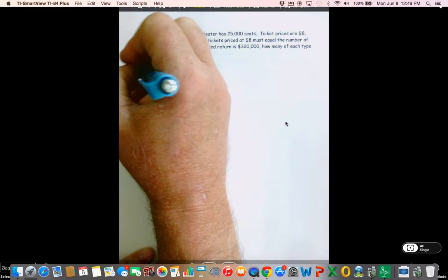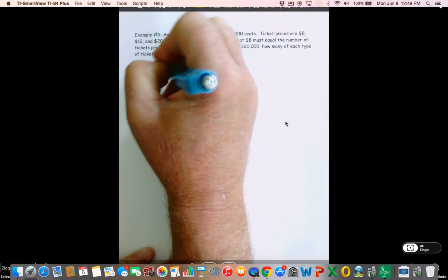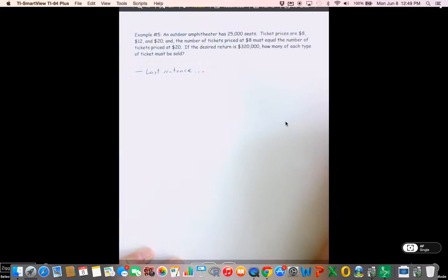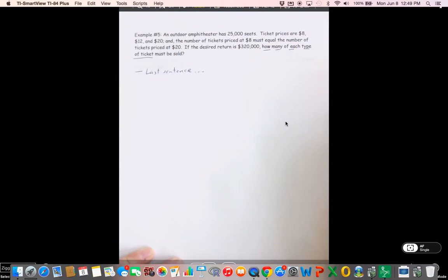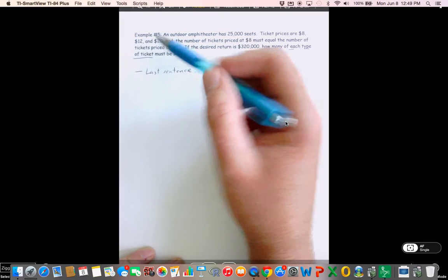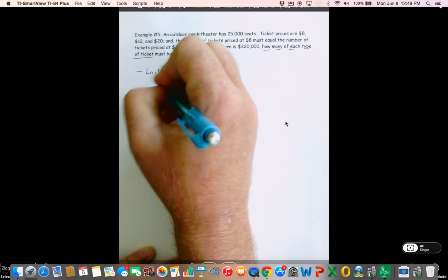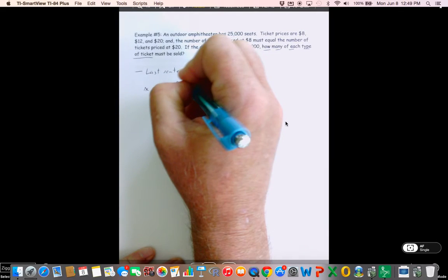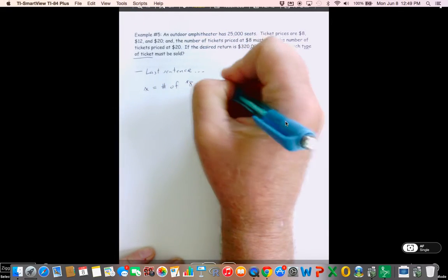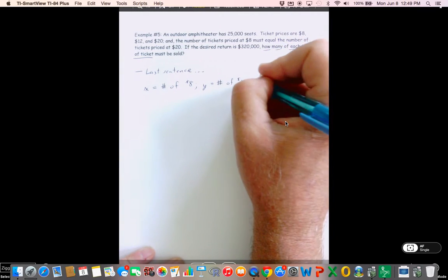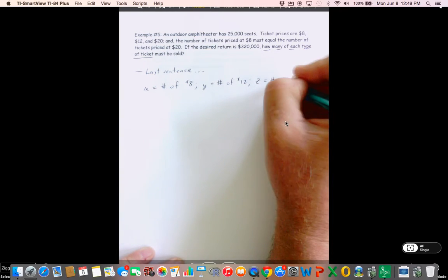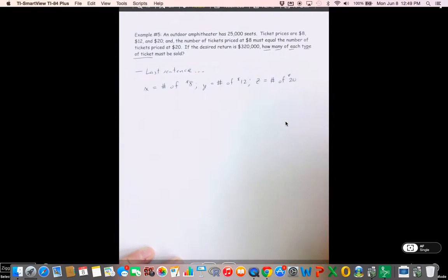Alright, so go to the last sentence. The last sentence says how many of each type of ticket? Well, I go back into my problem. What kind of tickets do we have? We've got the $8 tickets, $12 tickets, and $20 tickets. So I'm going to let X be the number of $8 tickets, Y is the number of $12 tickets, and Z is the number of $20 tickets.